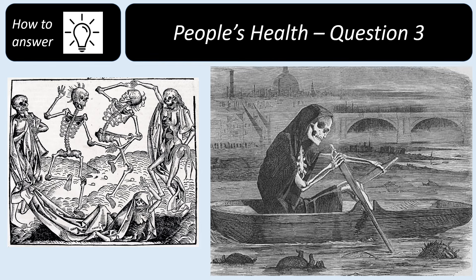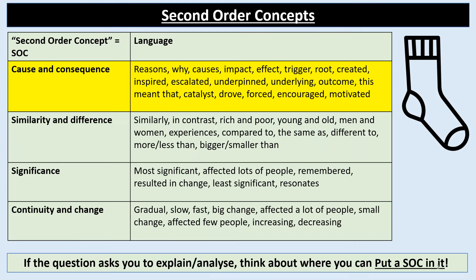Welcome to this revision video on how to answer People's Health question number three. Within this question, you're going to need to write about second order concepts. The key second order concept for this question is going to be cause and consequence. Question number three is always linked to cause and consequence.